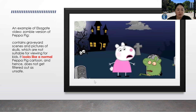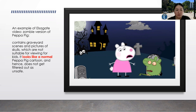So what is an Elsa gate video? Here I show a frame taken from an Elsa gate video. This is a zombie version of Peppa Pig. It looks like a normal cartoon video, but if you pay attention to the details you will find some inappropriate content.